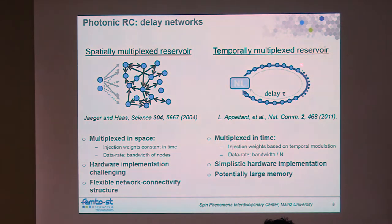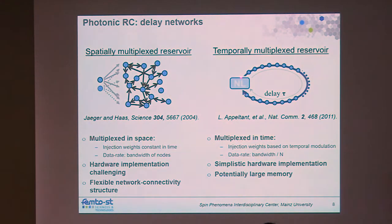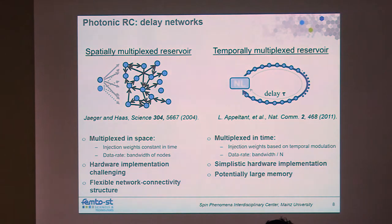Taking a single nonlinear node coupled to a delay corresponds to a network of ring oscillators. The system is now multiplexed in time — you must wait one full delay time for a complete state update. However, you no longer need to manage the full connectivity matrix. The scaling problem goes from N-squared to only a slowdown by a factor of N as system size increases, which from an experimental standpoint is much simpler to implement.